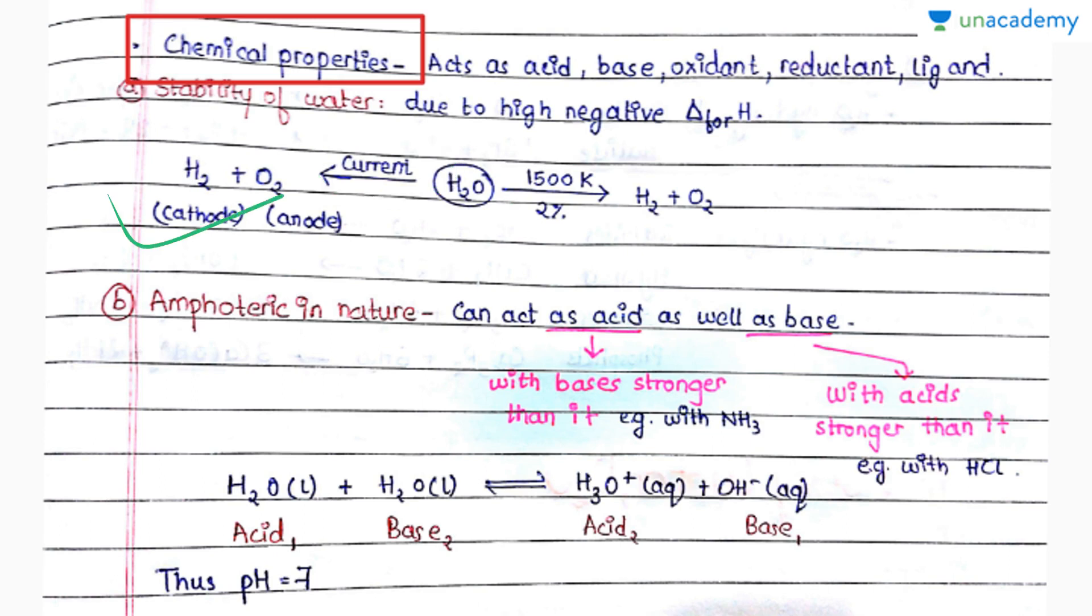It is amphoteric in nature—that is, it can act as an acid as well as base. It will act as an acid when we react it with a stronger base, for example ammonia. It will act as base when we react it with a stronger acid, for example HCl. So it will have pH 7 and it will be neutral to litmus.